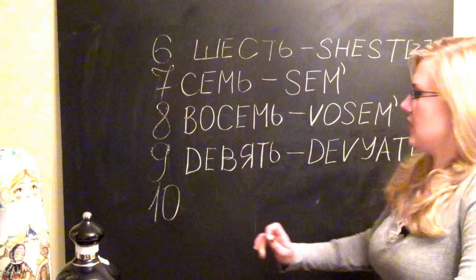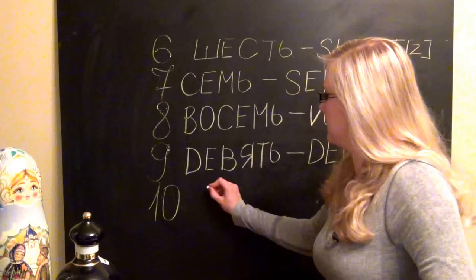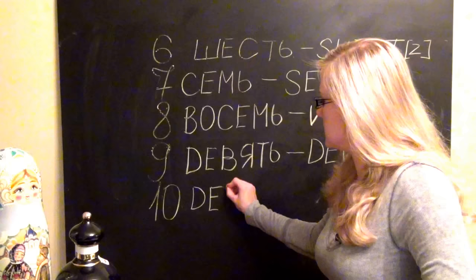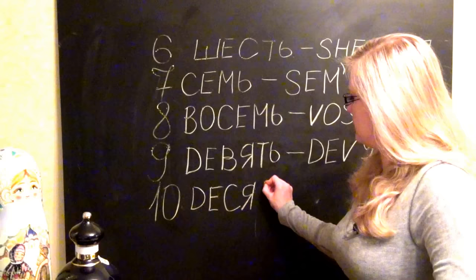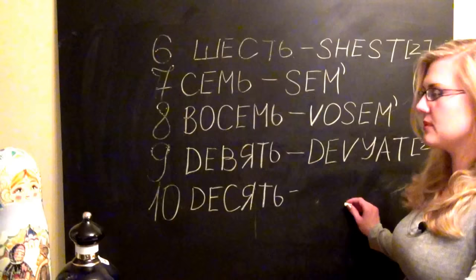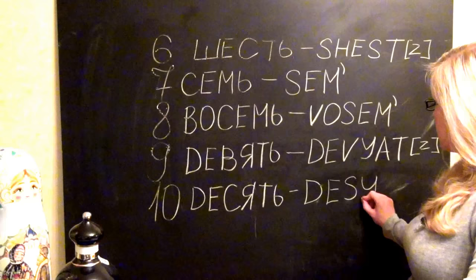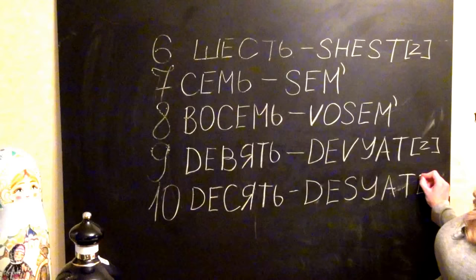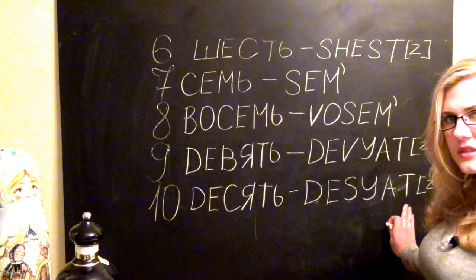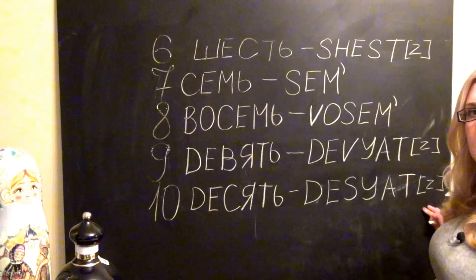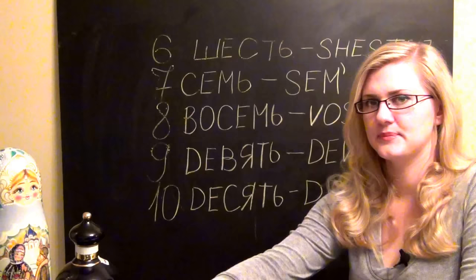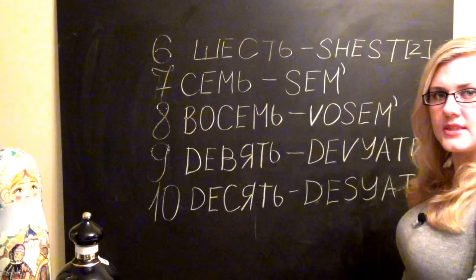And the last one. Десять. Also with the soft Z in the end. So it's десять. I hope it's easy to understand so far and easy to follow. And in translate will be the following way. Десять. And let's try to go from top down. Okay. Шесть. Семь.